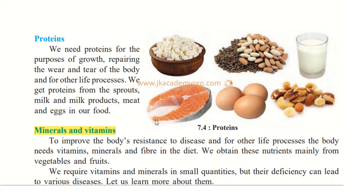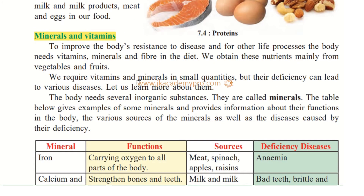From the different kinds of food that we eat, we get a lot of minerals and vitamins which are required for the body. To improve the body's resistance to disease — resistance means to fight any kind of disease — we need good food. Therefore, vitamins, minerals, and fiber are required for our body to resist disease and for other life processes.